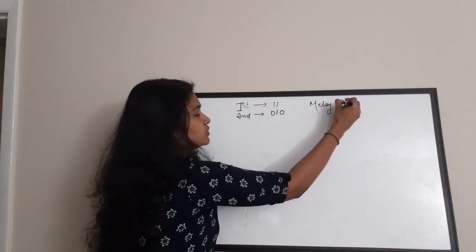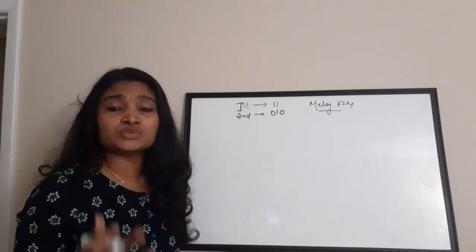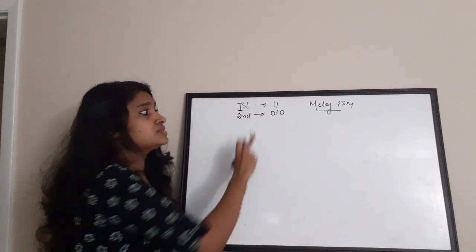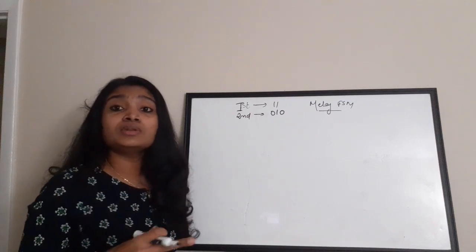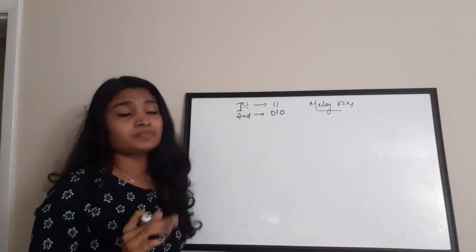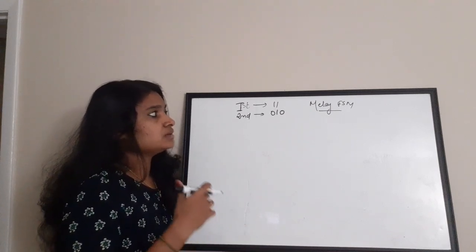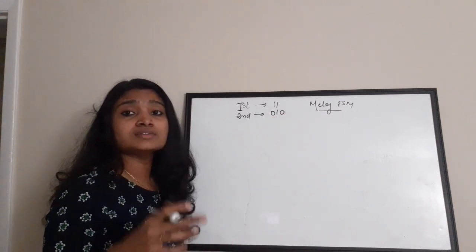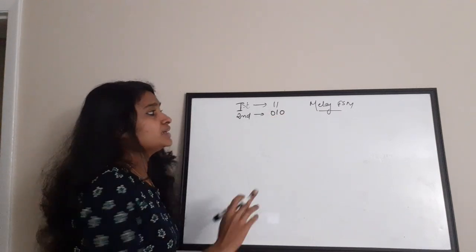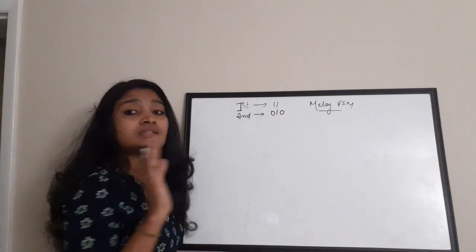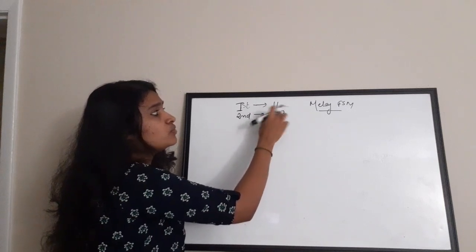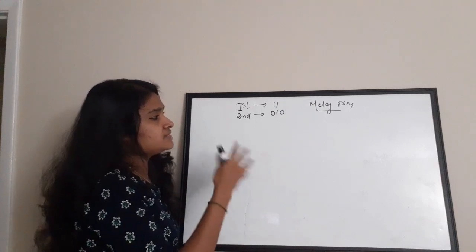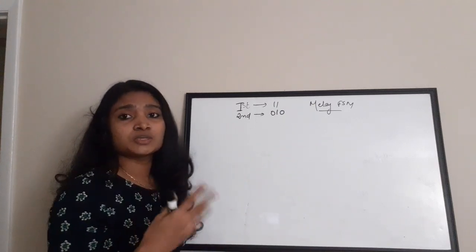We are going to design this using the Mealy FSM model, and I will teach you how to draw the state diagram. For a Mealy sequence detector, if the number of bits is n, it requires n states. So for detecting '0 1 0' it requires three states, and for detecting '1 1' it requires two states.